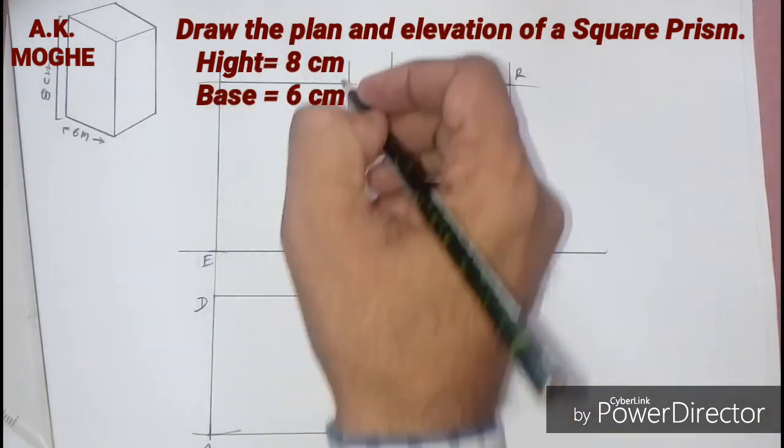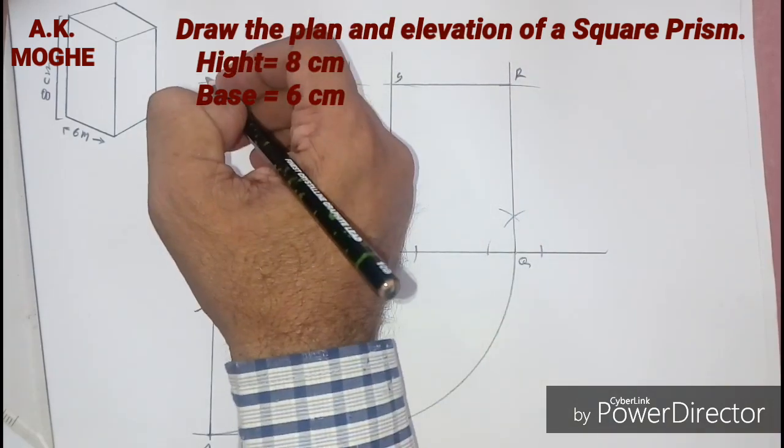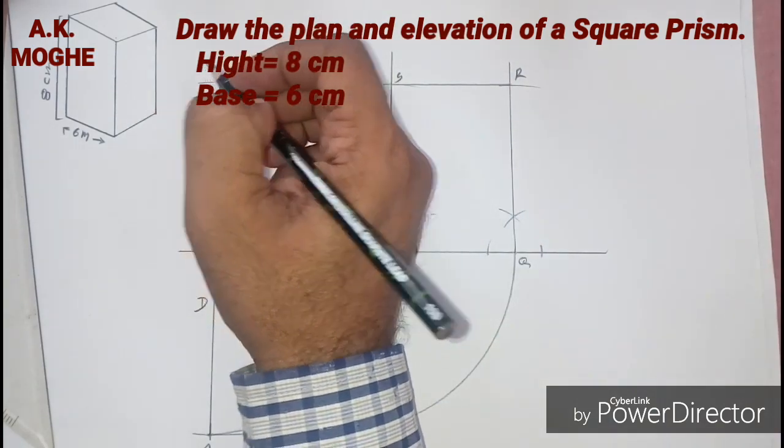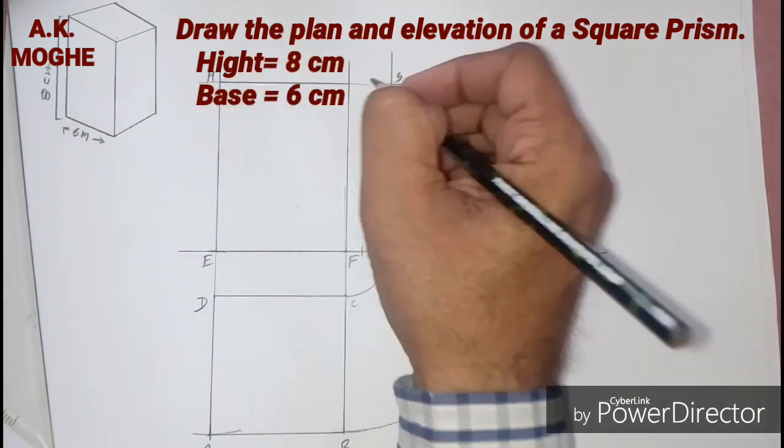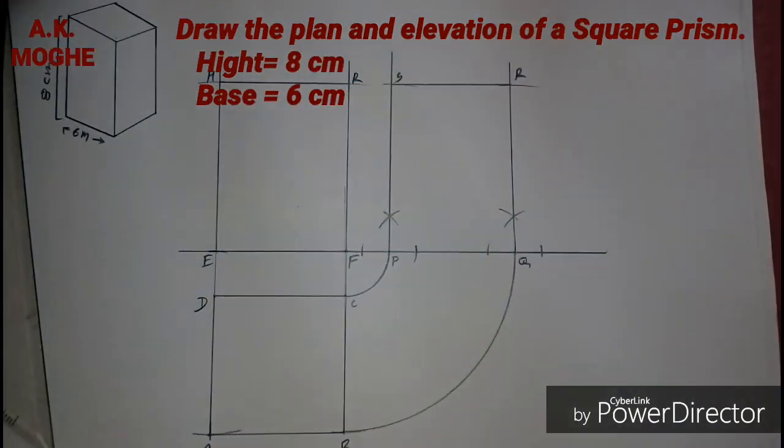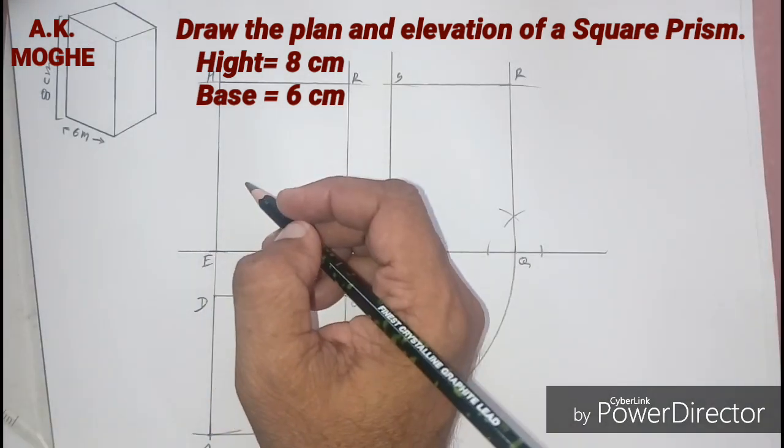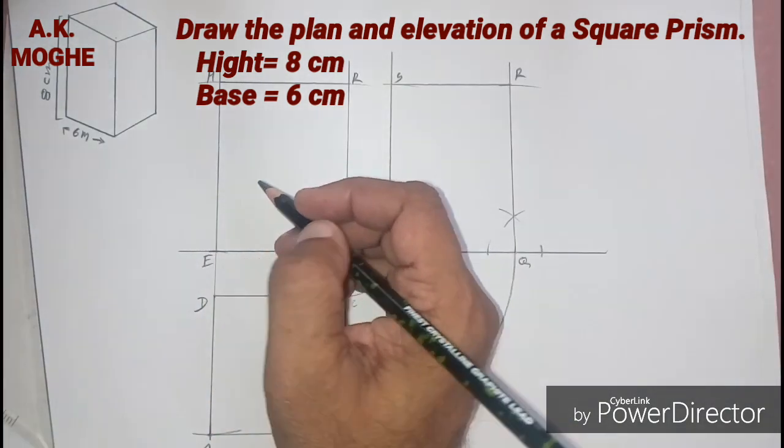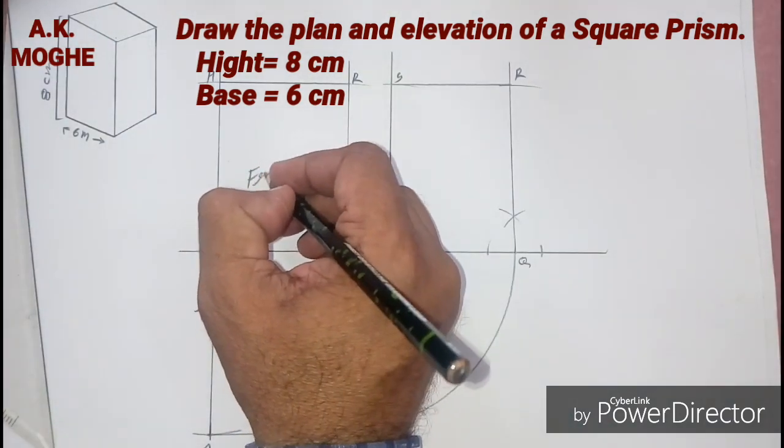As a side view, so we are getting all 8 cm as side view, front view, and top view with proper naming. And proper naming.